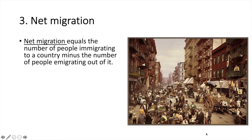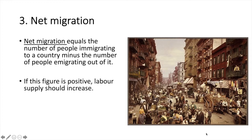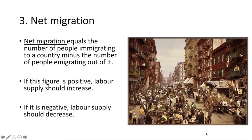3. Net Migration. Net migration equals the number of people immigrating to a country minus the number of people emigrating out of it. If the figure is positive, labour supply should increase; if negative, labour supply should decrease. The US has experienced positive net migration for decades as it is perceived as an attractive country to work and live in. If that changes, or if other countries are more appealing, US net migration may decline.